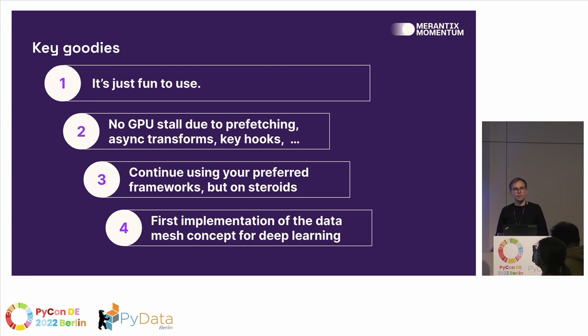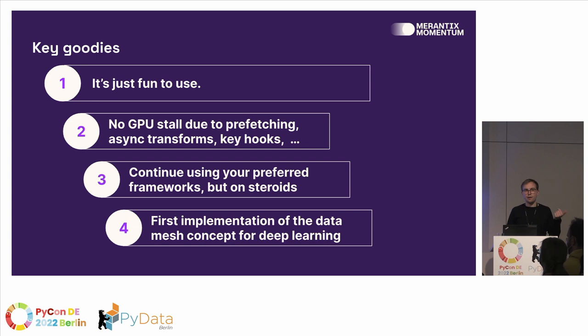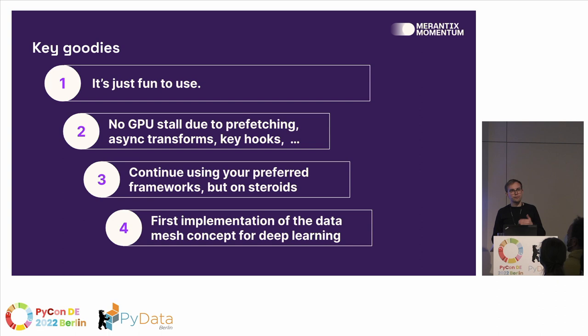So why should you use Squirrel? First, we think the API is just fun to use, which is a great asset. Moreover, you have a lot of functionality to prevent GPU stalling — pre-fetching, asynchronous transforms, key hooks, and more — everything to keep your machine busy. You don't have to throw away what you already built; you can continue using your preferred frameworks but now on steroids. And finally, we provide one of the first implementations of the data mesh concept for deep learning, and we're very excited for your feedback.